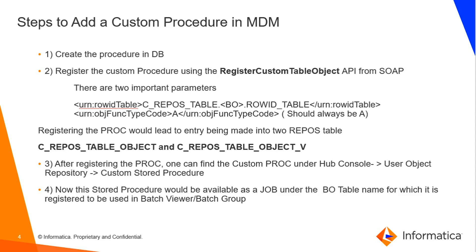We pick the row ID table from the C repos table for that BO and put it in the row ID table tag. The function type code will always be 'A'. There are also name and description tags, and whatever name and description we give will be displayed in the MDM end. Once we register, there will be entries in C repos table object and C repos table object V, and we can see the custom stored procedure displayed under user object registry. After registration, we get this procedure as an additional job option in the batch viewer under the 'Custom' tab, where we can run it at will in a batch viewer or batch group.